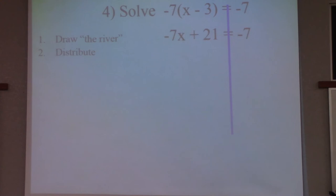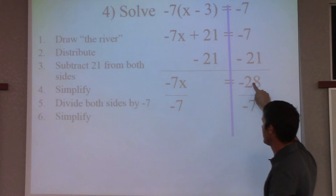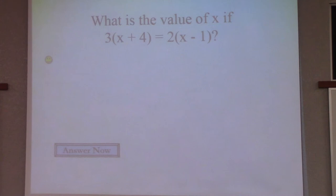Distributive property. This would be practice from yesterday. The biggest thing I want to point out is you have a negative 7x times negative 3. So check this sign. Draw a river. Check this sign here. We have a negative times a negative. That's going to make it positive. To get rid of 21, we subtract it. So negative 7 minus 21 is negative 28. And to get rid of this 7, keep the sign with it. We have a negative. A lot of students forget that sign. Keep that sign with it. So we want to divide by negative 7. Negative 28 divided by negative 7 is positive 4.